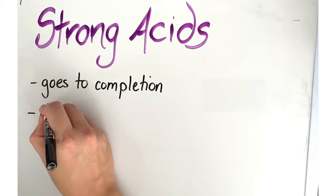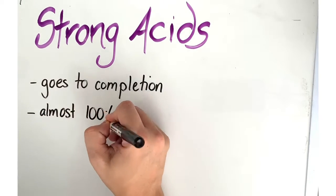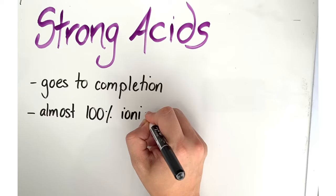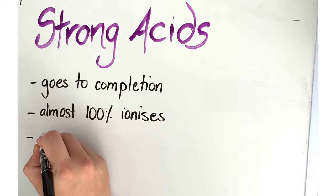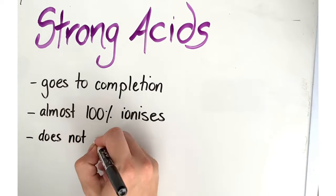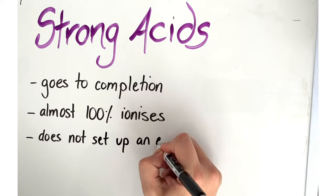When this happens, the acid is virtually 100% ionized, meaning that the equilibrium lies very much to the right-hand side of the above equation. This means that all of the acid molecules have separated into ions.